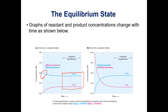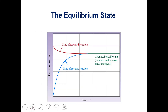We can also do the opposite, starting with only NO2, which was written as a product. Some of that NO2 is going to react to form N2O4, since this reaction goes in the other direction. Then some of that N2O4 will break back down into NO2. Eventually we again reach a point where the concentrations of both are not changing — the rate of the forward reaction and the rate of the reverse reaction are equal, so our concentrations don't change.